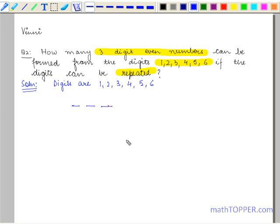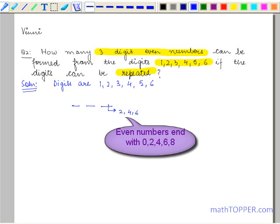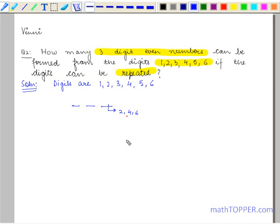At the last place, we can have only 2, 4, and 6 in order to make it an even number. So at the last place, we can have 3 possibilities.